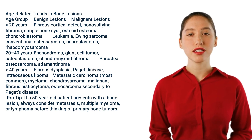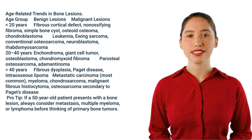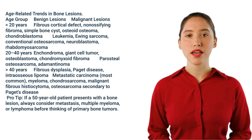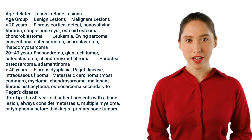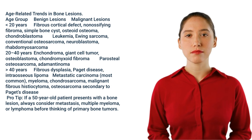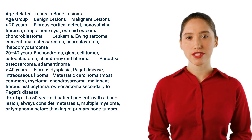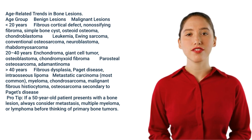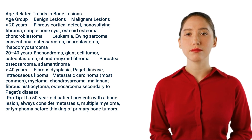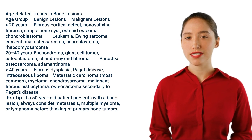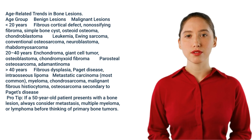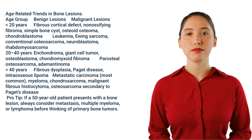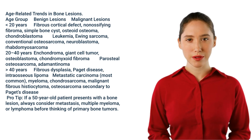Over 40 years, benign lesions include fibrous dysplasia, Paget disease, and intraosseous lipoma. Malignant lesions include metastatic carcinoma (most common), myeloma, chondrosarcoma, malignant fibrous histiocytoma, and osteosarcoma secondary to Paget's disease. Pro tip: if a 50-year-old patient presents with a bone lesion, always consider metastasis, multiple myeloma, or lymphoma before thinking of primary bone tumors.